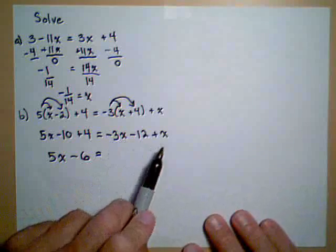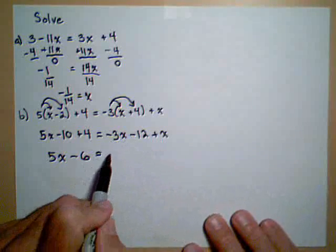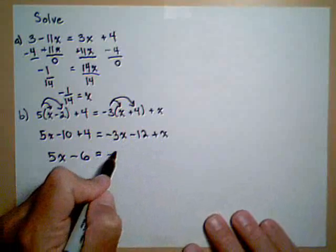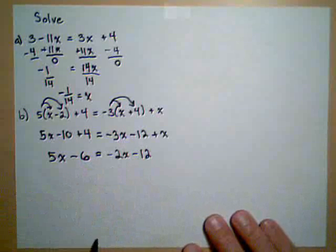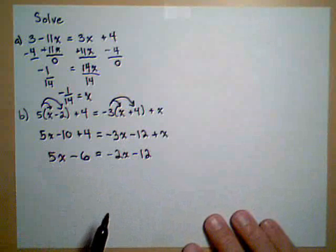Over here, we can combine the x terms. Minus 3x plus x gives us minus 2x. Nothing to combine with the 12 is minus 12. And now we're in a similar situation to part A.